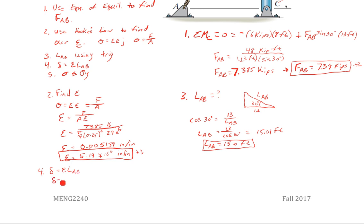Delta equals 0.005188, so I'm going back to my four significant figures to get a little bit more accuracy without rounding. I'm also going to do the same with my length, 15.01 feet, and I'm going to multiply that by 12 inches per feet to get this in inches. So delta is going to be 0.935 inches.